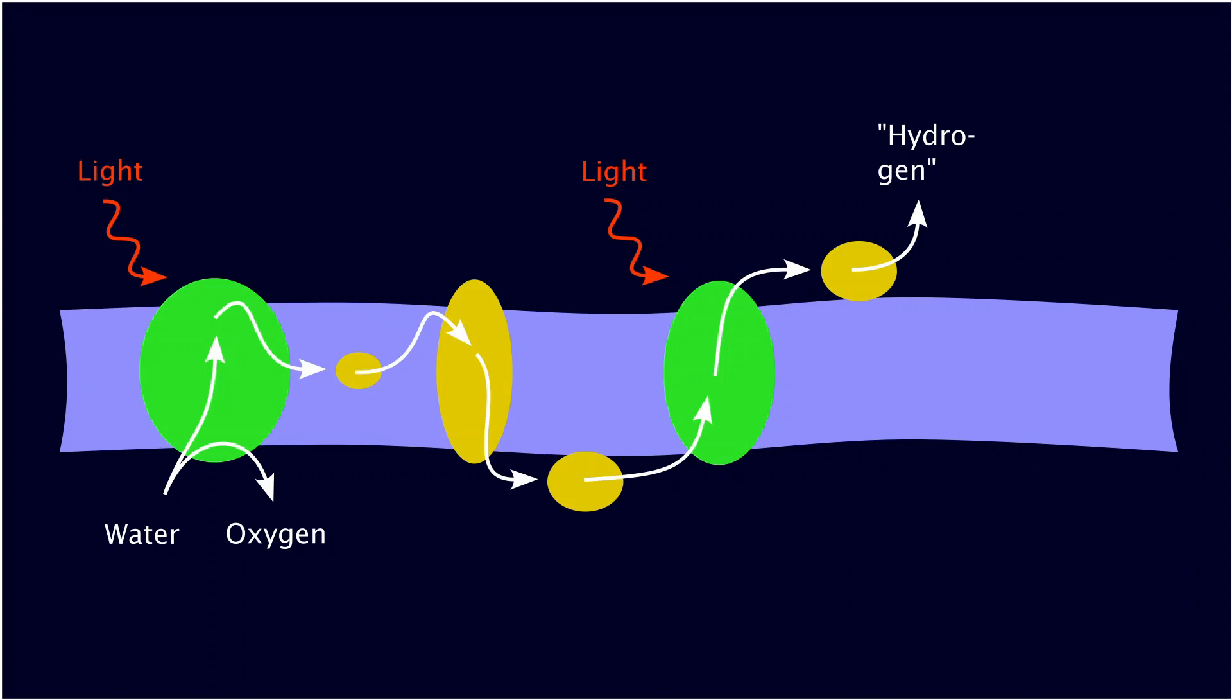And these two complexes, which I have labeled in green here, they are responsible for this transformation. They are absorbing light and are driving the flow of electrons through this chain, therefore allowing the formation of hydrogen in the end.